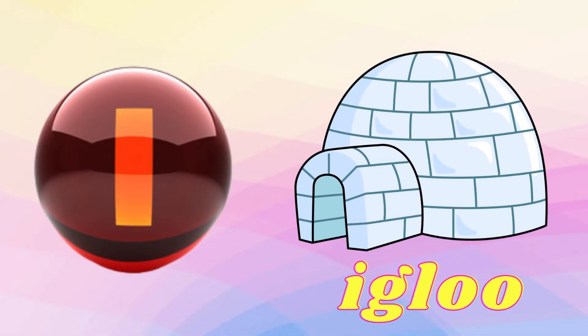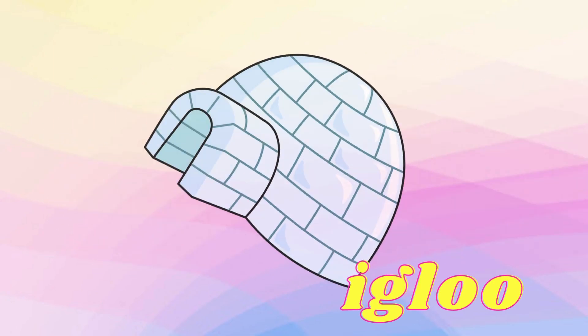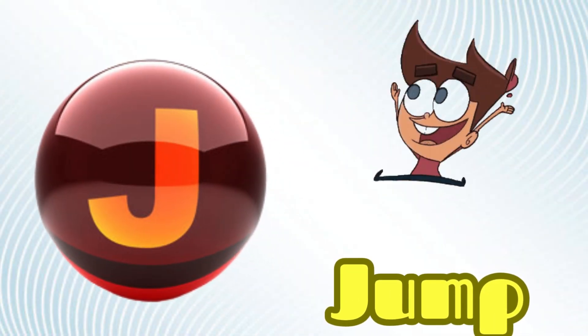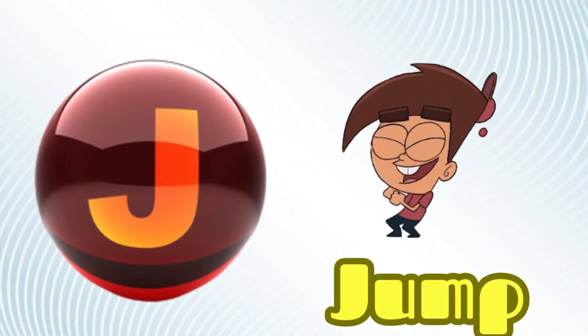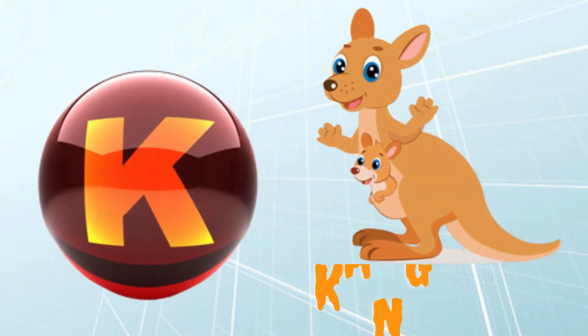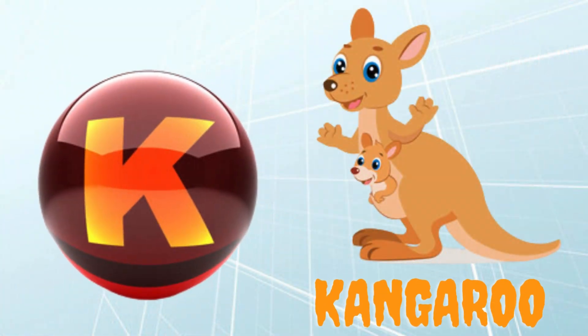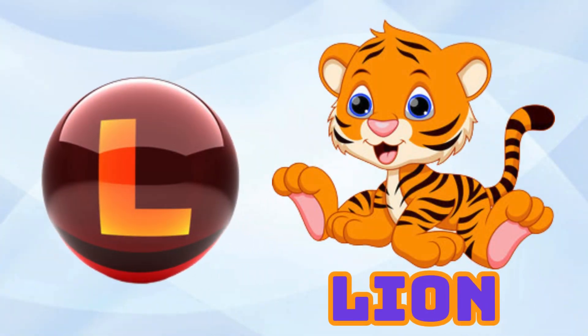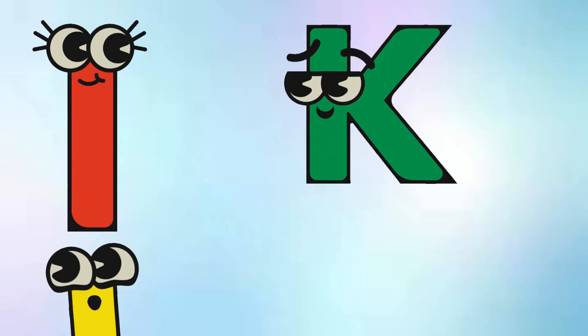I is for Igloo, I-I-Igloo. J is for Jump, J-J-Jump. K is for Kangaroo, K-K-Kangaroo. L is for Lion, L-L-Lion.